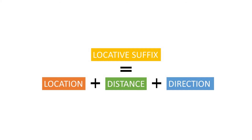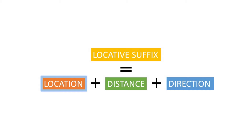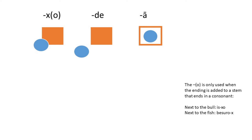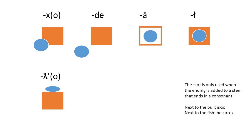Tsez forms its 56 other cases by combining things together in a very logical way. To mark a noun as a location, we add a locative suffix - this suffix has three different slots: location, distance, and direction. Each slot is a little mini suffix that gets glued onto the others to make one whole locative suffix. The first slot shows one of seven locations: generally just at something, near something, inside a hollow object like a bag or a building, inside a mass noun like water or sand, on top of something, on the side or face of something, and under something.